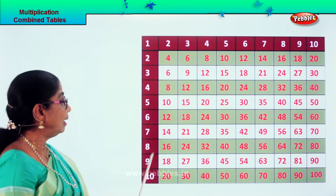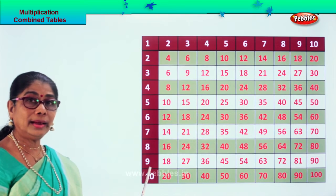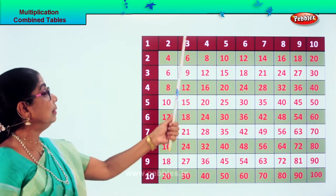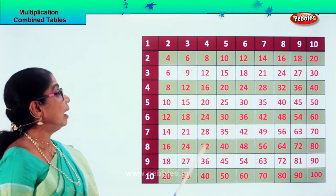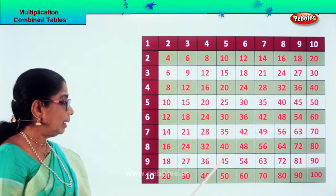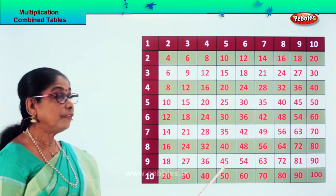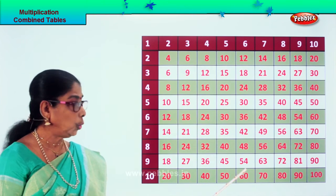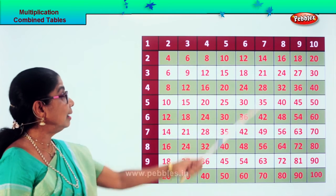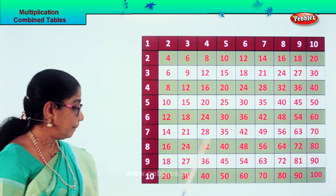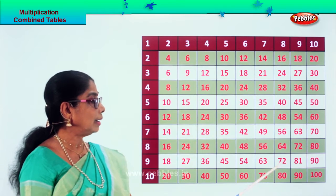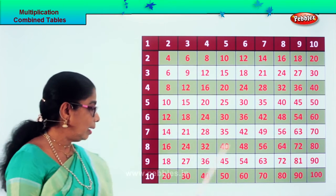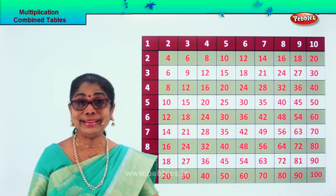Now let's take it this way: nine ones are nine, nine twos are eighteen, nine threes are twenty-seven, nine fours are thirty-six, nine fives are forty-five, nine sixes are fifty-four, nine sevens are sixty-three, nine eights are seventy-two, nine nines are eighty-one, nine tens are ninety.